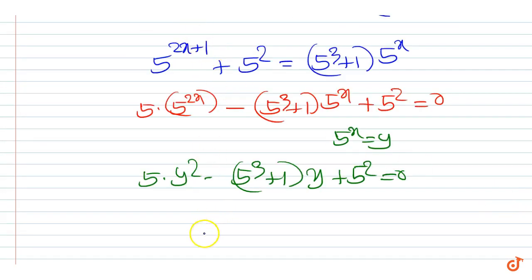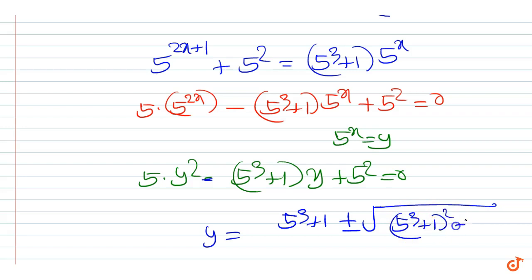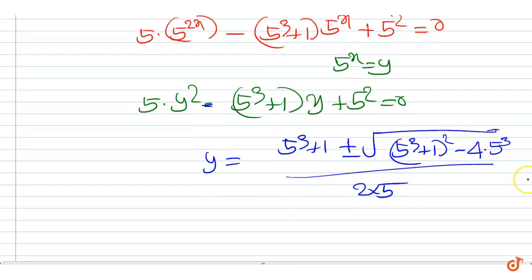Solving as a quadratic in y, we get y equal to minus b — that is 5 cubed plus 1 — plus or minus square root of b squared, which is 5 cubed plus 1 squared, minus 4 times 5 times 5 squared, all upon 2 times 5.